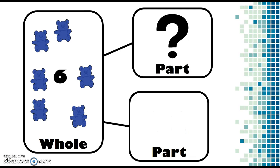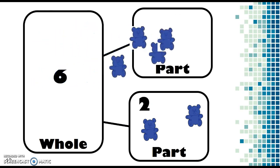Now, this can look like the bears shifting back to the part, so I am going to have 2 bears shifting back to the part, and the remaining 4 bears shifting back to my other part.